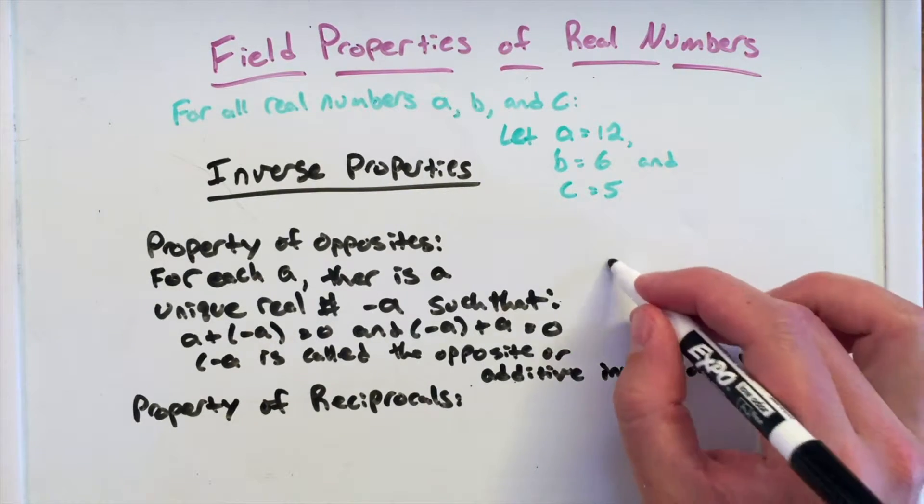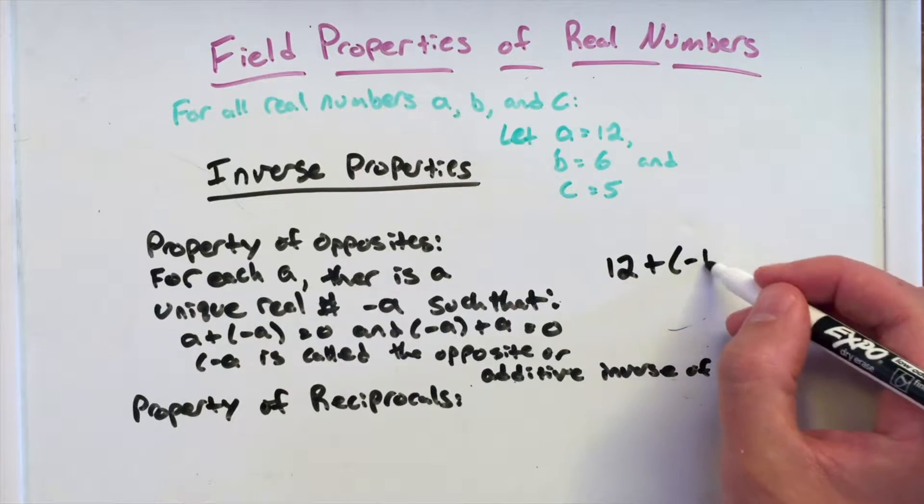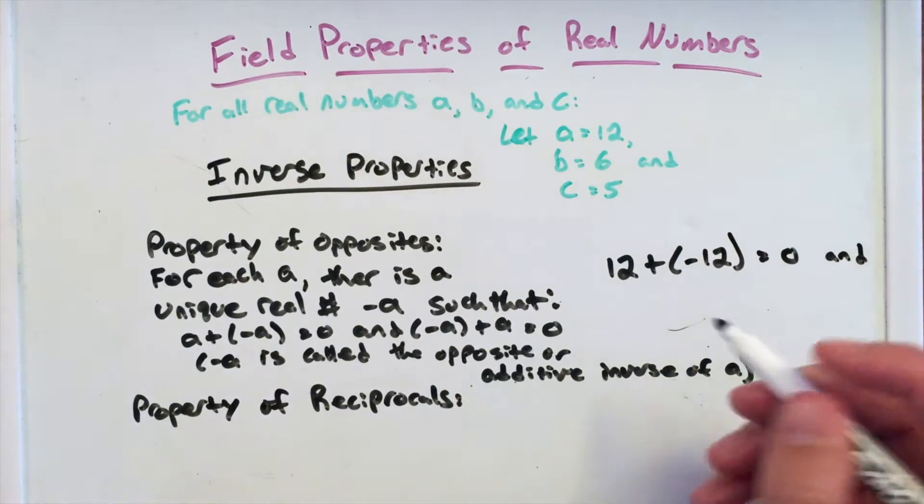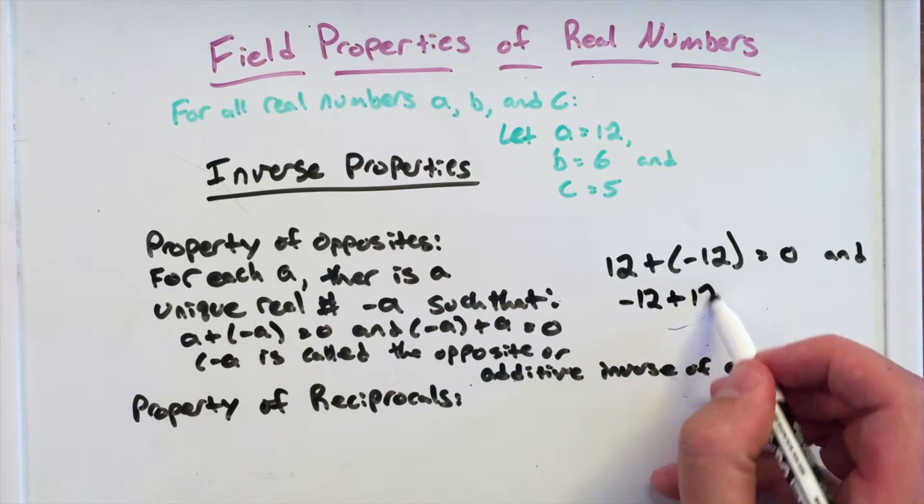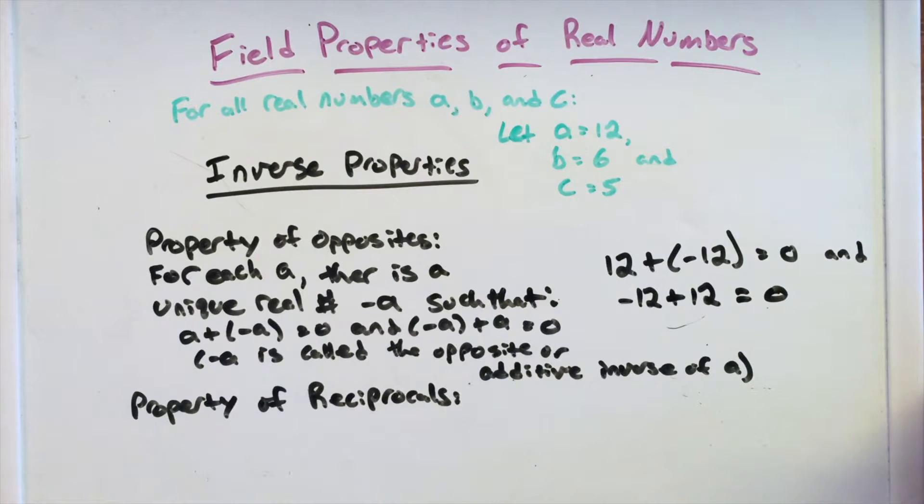So if you see that in a real example of it, 12 for being A plus its additive inverse, which is negative 12, equals 0. And negative 12 plus 12 equals 0. They kind of cancel each other out to get 0 when you add them together.